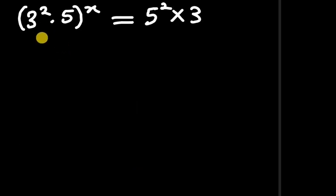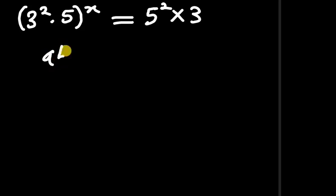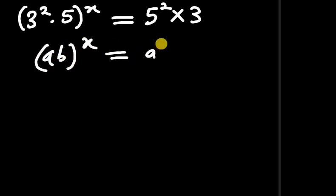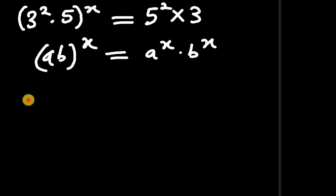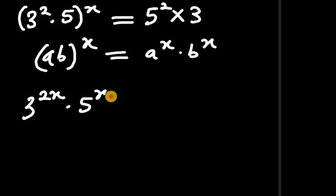So we now have 3 to the power of 2 times 5, all to the power of x, equals 5 to the power of 2 times 3. Using the identity (ab)^x = a^x · b^x, we distribute the exponent to get 3 to the power of 2x times 5 to the power of x, equals 5 to the power of 2 times 3.